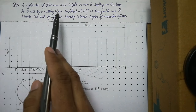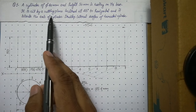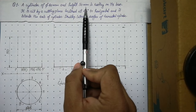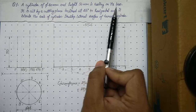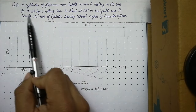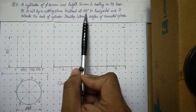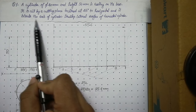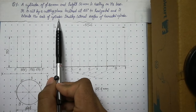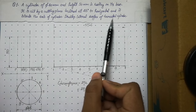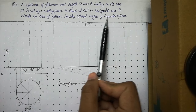Now let us understand this particular question. What it says is: a cylinder of diameter 40mm and height 50mm is resting on its base. It is cut by a cutting plane inclined at 45 degrees to horizontal and it bisects the axis of the cylinder. Develop the lateral surface of the truncated cylinder.